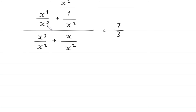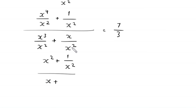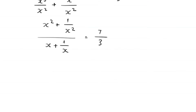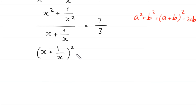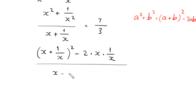Simplifying: x⁴/x² = x², and 1/x² stays. The denominator gives x³/x² = x and x/x² = 1/x. So we have (x² + 1/x²) / (x + 1/x) = 7/3. Now using the algebraic identity a² + b² = (a + b)² − 2ab, we rewrite x² + 1/x² as (x + 1/x)² − 2·x·(1/x), giving [(x + 1/x)² − 2] / (x + 1/x) = 7/3.